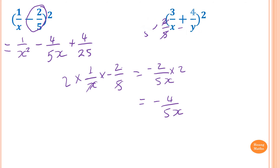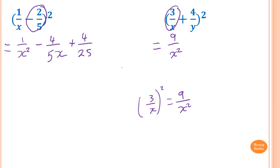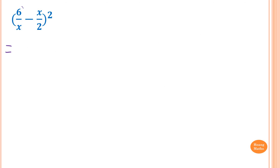Please stop the video and try this one yourself. To expand (3/x + 4/y)²: square 3/x first — using index rules, 3² = 9 and x² gives 9/x². Then 3/x times 4/y is 12/xy, doubled gives 24/xy. Then square 4/y: 4 times 4 is 16 and y times y is y², so 16/y².